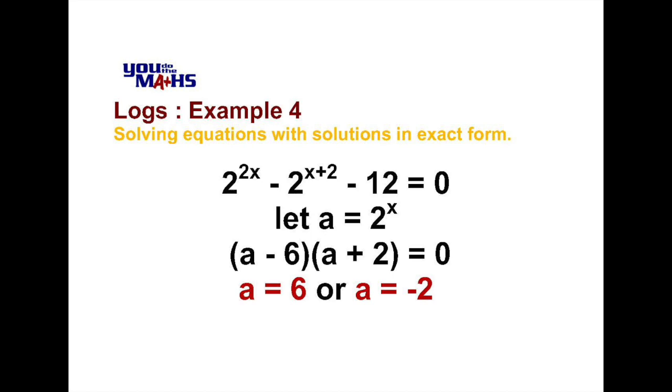Now we need to remind ourselves that we're not solving for a, we're solving for x. So we've got to go back to our original statement that a equals 2 to the x. So now we're solving 2 to the x equals 6 or 2 to the x equals negative 2.